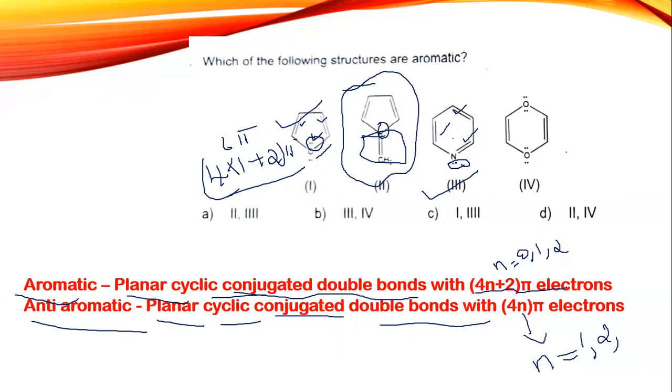The last one has 2, 4, 6, and 8 pi electrons, which comes in the anti-aromatic part, which is 4 into 2 pi electrons or 4n pi electrons. So that is anti-aromatic. The answer would be 1 and 3. This should be actually 3, maybe they had some typos in the question paper. So option C is the correct answer.